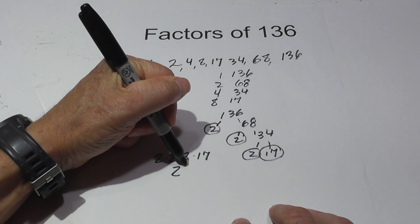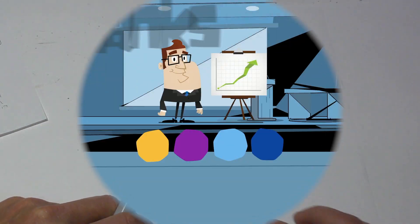So the prime factorization looks like 2 times 2 times 2 and 17, or 2 cubed times 17.